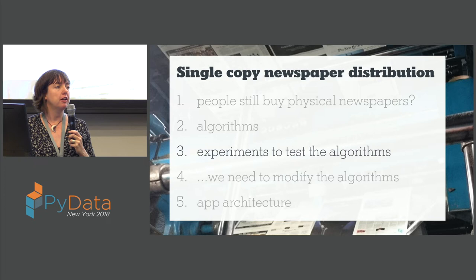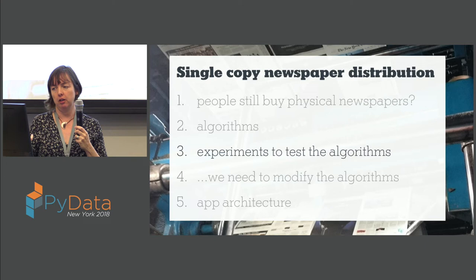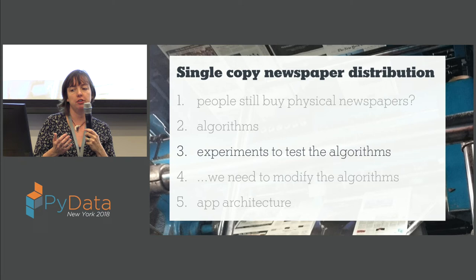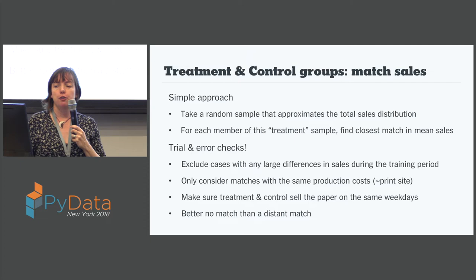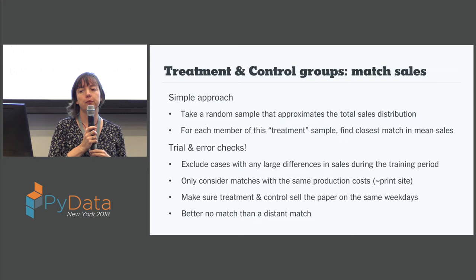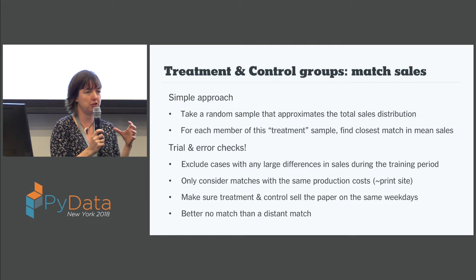Now that we had a couple of different algorithms, we also wanted to compare not just between them but between us and the previous original algorithm, which we tend to call BAU — business as usual. The first thing we needed to do in running these experiments is figure out treatment and control groups of stores. This is a cool project because you can actually deploy different algorithms in actually different physical stores and see what happens — cross your fingers and hope that you don't tank the New York Times.